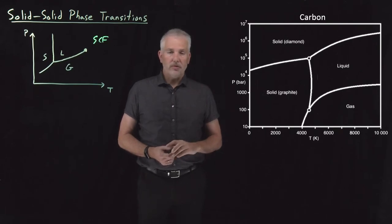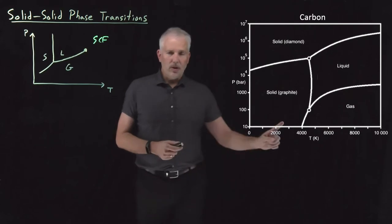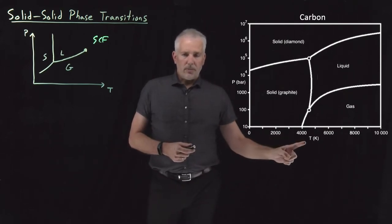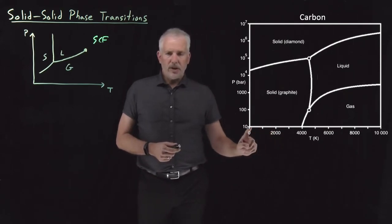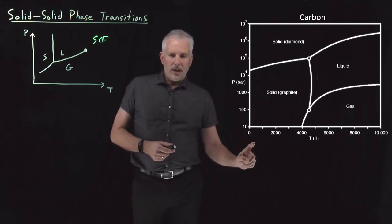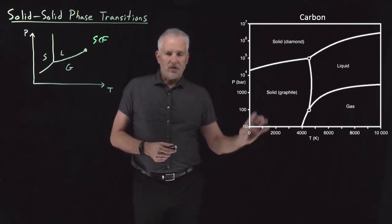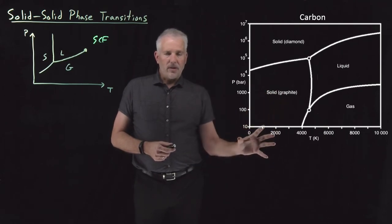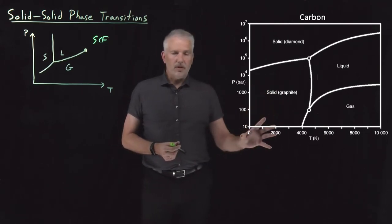If I want to know which phase of carbon is most stable at room temperature and room pressure. Temperatures in Kelvin, 300 Kelvin is going to be way down here somewhere. One atmosphere pressure is going to be off the bottom of this chart. This is clearly somewhere in the solid graphite phase of the phase diagram.